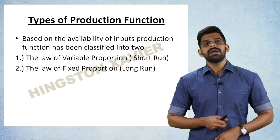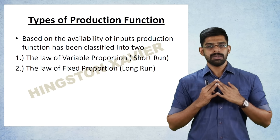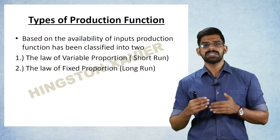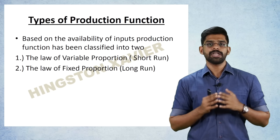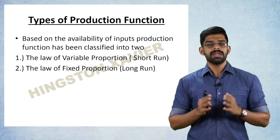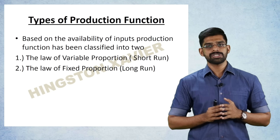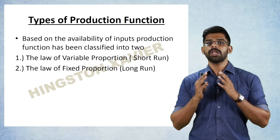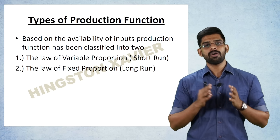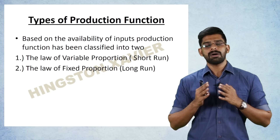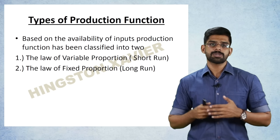Based on the availability of inputs, the production function has been classified into two: the short-run production function and the long-run production function. Short run follows the law of variable proportion, and long run follows the law of fixed proportion.